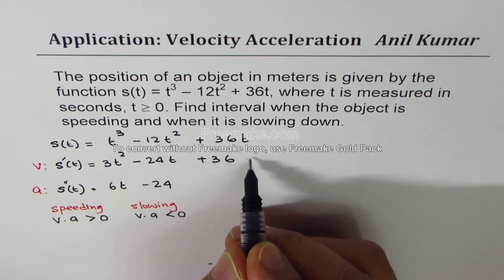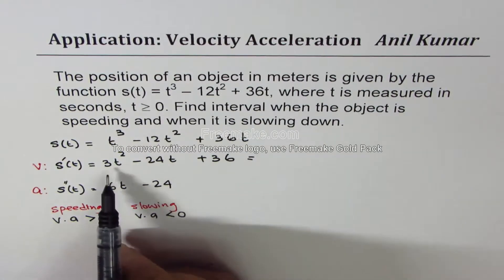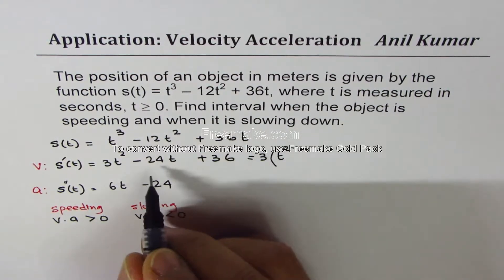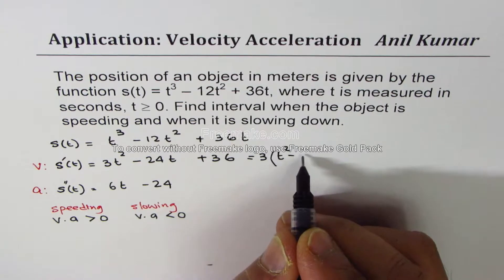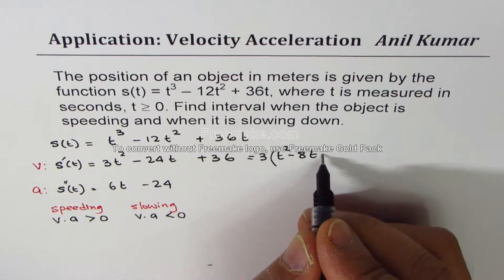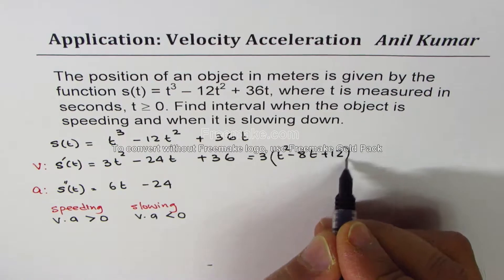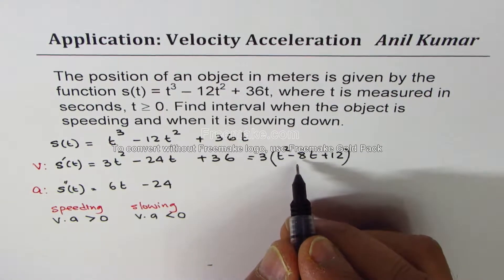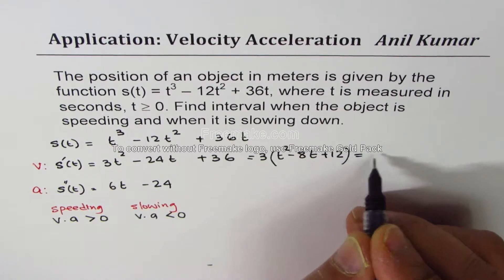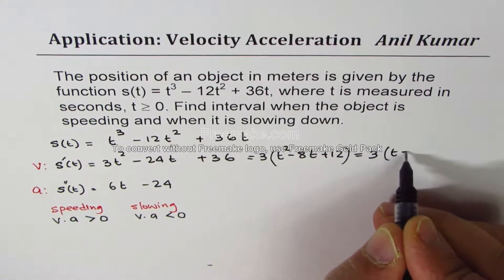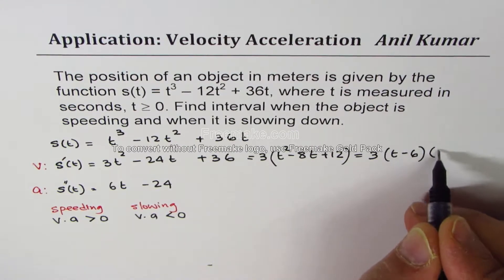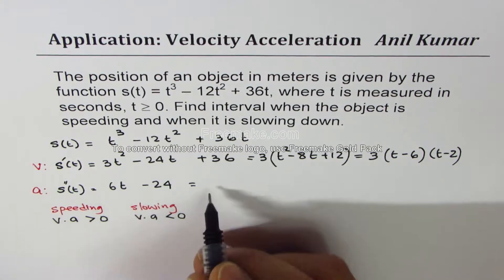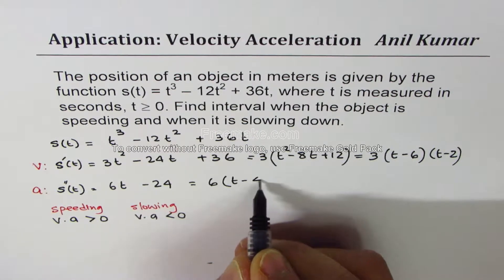Now, for that, it is good to factor these. So we could take 3 common. Then we are left with t² - 8t + 12. So 2 numbers which will give us 12 as product and sum as minus 8 will be 6 and 2, right? So we get 3(t - 6)(t - 2). Similarly, for acceleration, we can take 6 common. We are left with 6(t - 4).